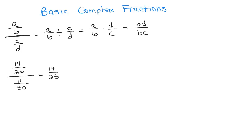So this means 14 25ths divided by 11 30ths, and then we can multiply by the reciprocal. And then we can see if anything could cancel. 5 goes into both 25 and 30. So 25 divided by 5 is 5, and 30 divided by 5 is 6. Nothing else cancels.